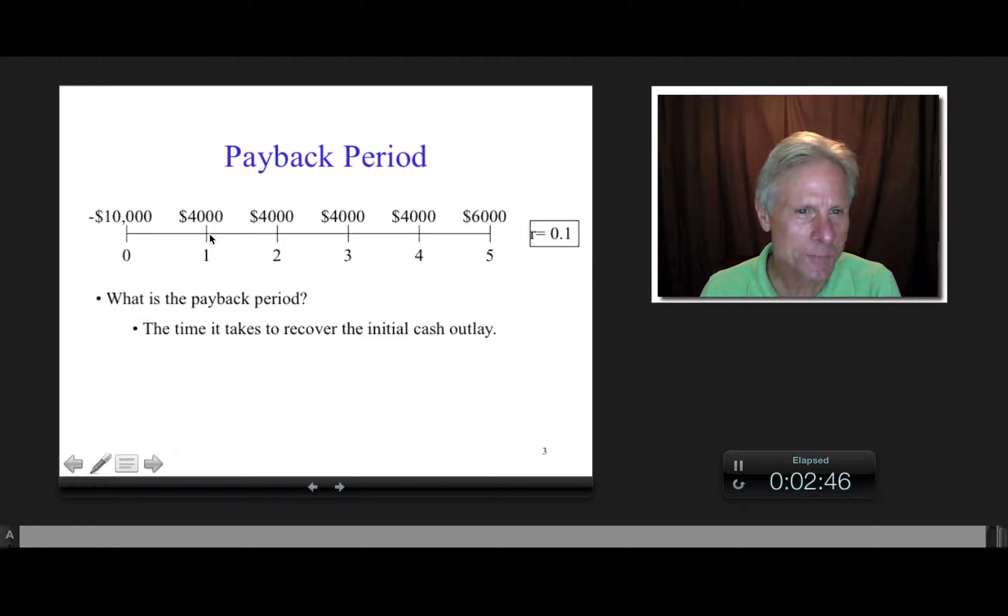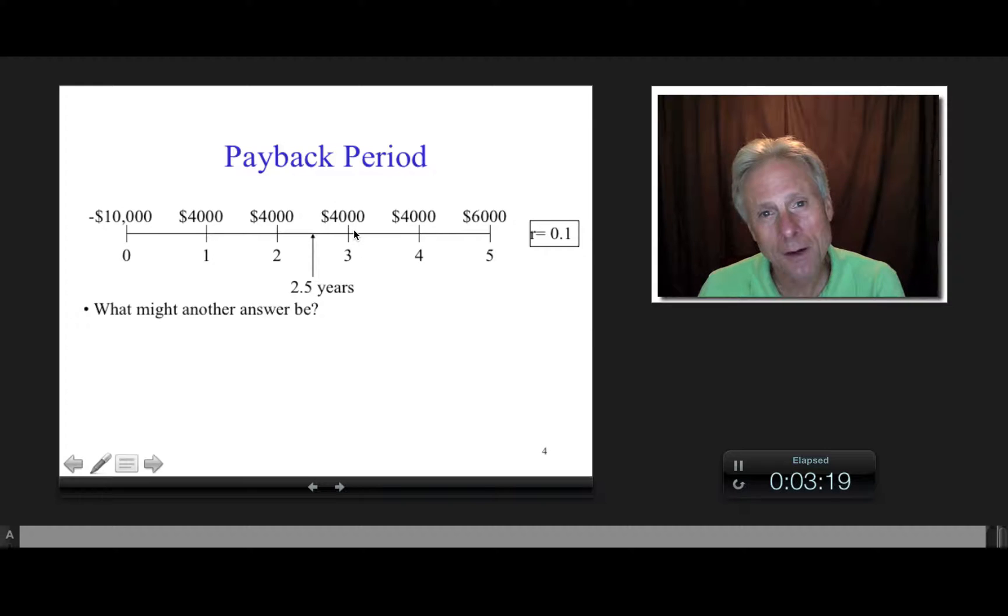So for example, at this point, time one, how much are we in the hole? Or how much are we off from this $10,000? Well, we're still down $6,000, right? And what about here? Well, now we've recouped a total of eight. So this is ignoring time value money. And we're down $2,000. What about here? Well, now we're up $2,000, right? So here we're down two. Here we're up two. So we might split the difference. We might say the payback period is two and a half years. Something right in the middle.